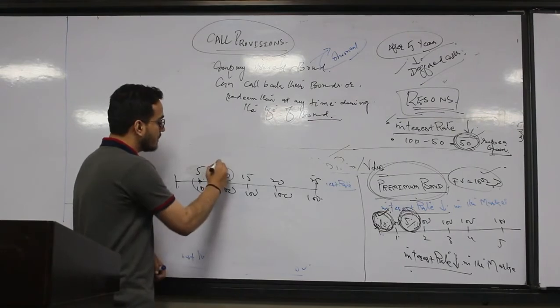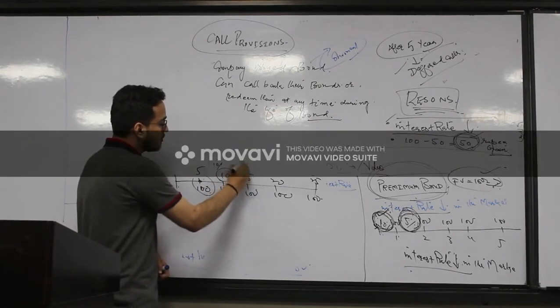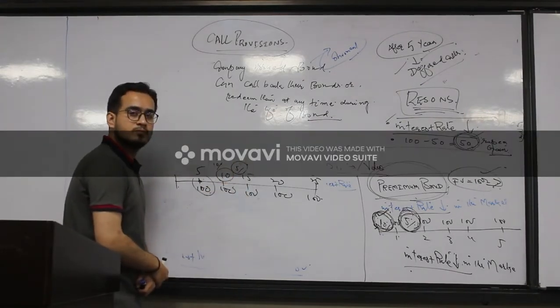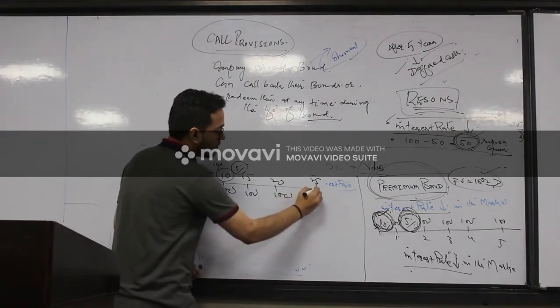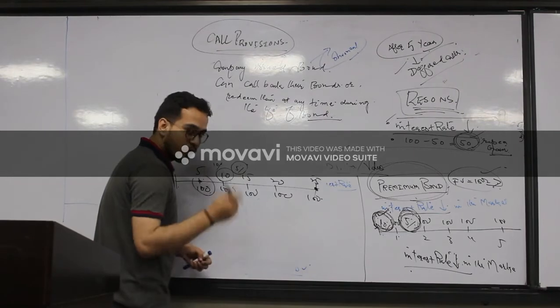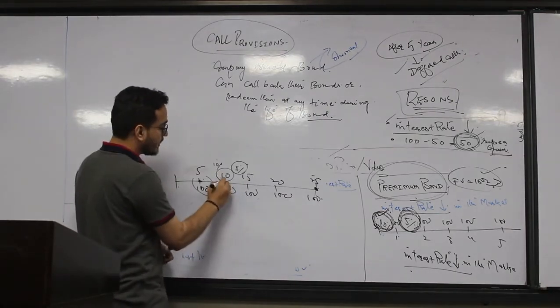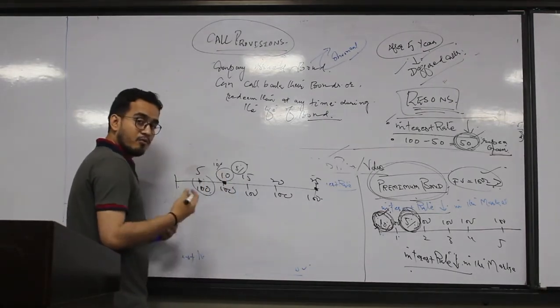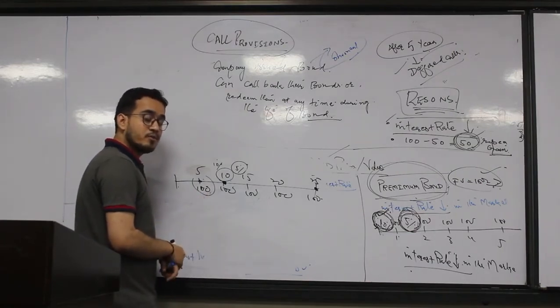So after ten years the interest rate goes down five percent. But still that bond is not mature. You are holding that bond and company is calling that bond at this stage.